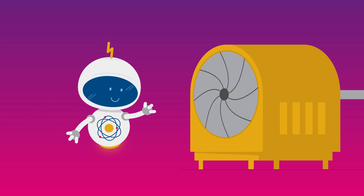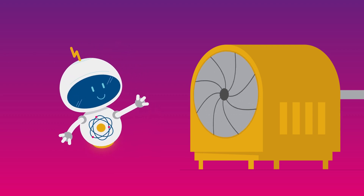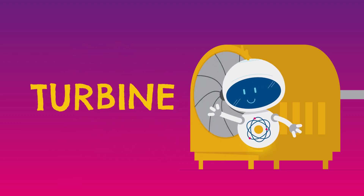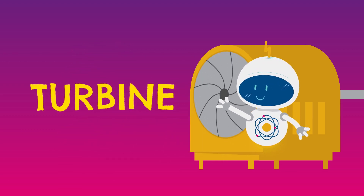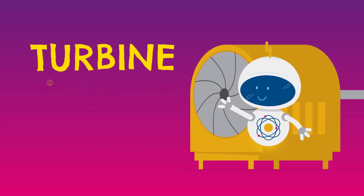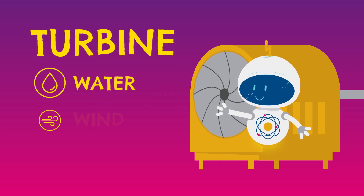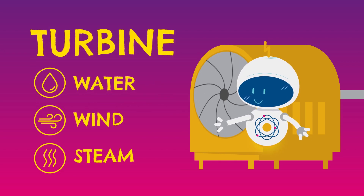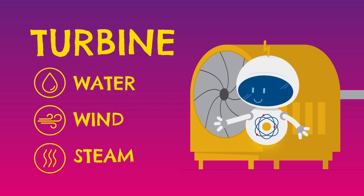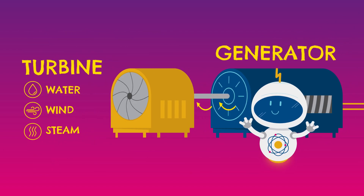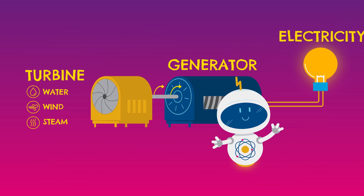Most electricity is produced by turning a wheel called a turbine. The turbine can be turned using water, wind or steam. Each turn moves a machine called a generator, which then makes electricity.